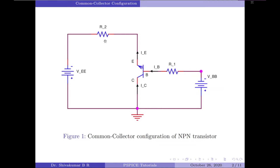The load current is equal to the emitter current. Since base and collector currents flow into the transistor, we call them by convention as positive currents. On the other hand, since emitter current flows out of the transistor, it will be regarded as negative current.